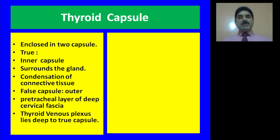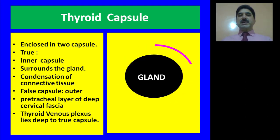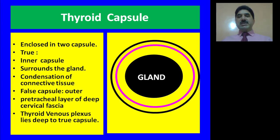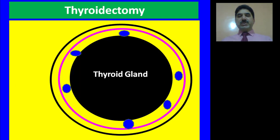The venous plexuses of the thyroid gland lie deep to the true capsule. As shown in this slide, the thyroid gland is surrounded by the true capsule or inner capsule. Outer to this is the false capsule of the gland, which, as already said, is derived from the pretracheal layer of deep cervical fascia. The thyroid venous plexuses lie deep to the true capsule of the gland.